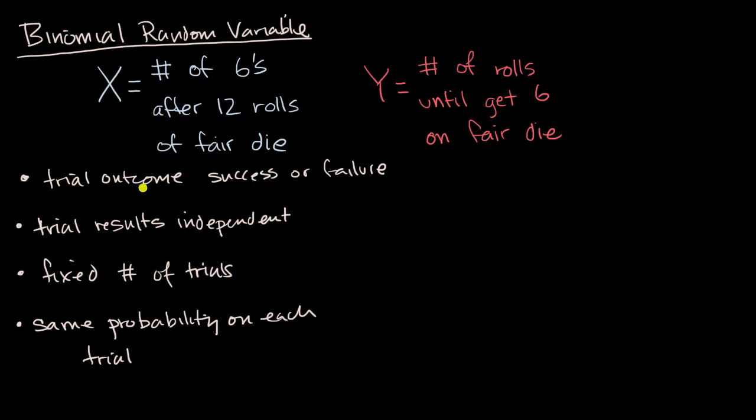So, does it meet that the trial outcomes, that there's a clear success or failure for each trial? Well, yeah, we're just gonna keep rolling. So each time we roll, it's a trial. And success is when we get a six, failure is when we don't get a six. So the outcome of each trial can be classified as either a success or failure. So it meets, let me, I'll put the checks right over here. It meets this first constraint.